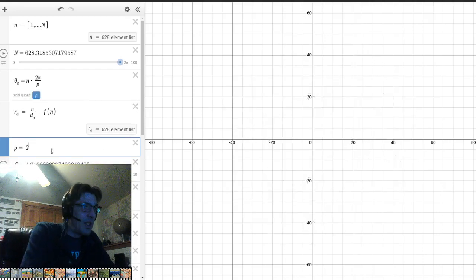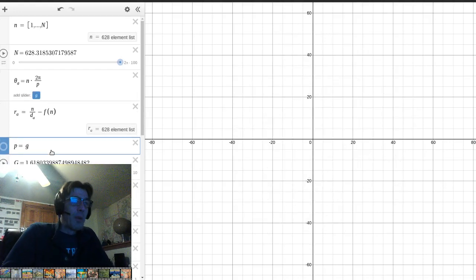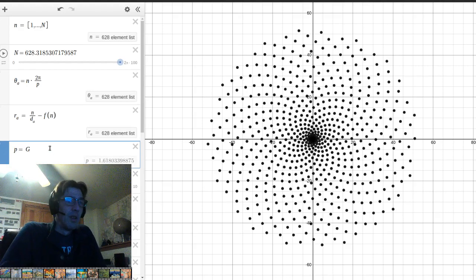And what the golden ratio is, is the perfect number for packing everything well. And you get these different kinds of spirals and whatnot.